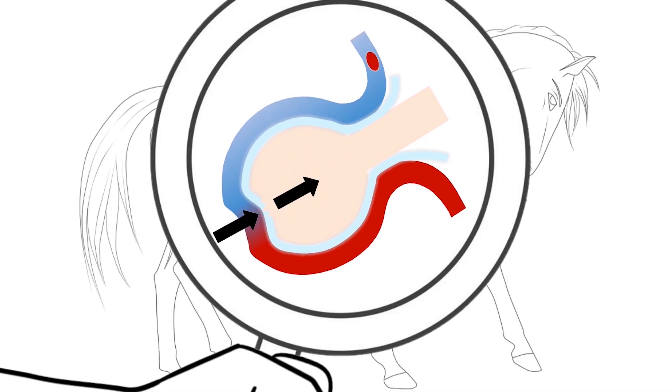Combined, these forces cause the membrane to rupture and red blood cells to spill out of the blood vessels into the airways, resulting in EIPH or bleeding.